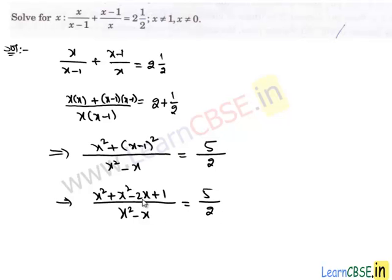To perform calculation easier, we use cross multiplication. Then we have 2 times 2x square plus x square, and we have negative 2x plus 1. And on RHS we have 5 times x square minus x.